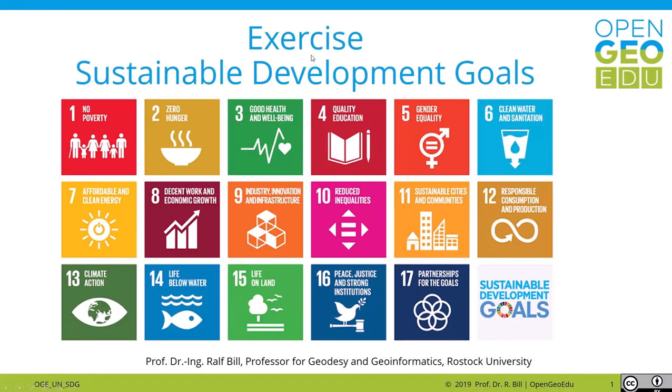The Agenda 2030 for Sustainable Development is a global United Nations Action Plan for People, the Planet and Prosperity, adopted by the UN General Assembly in September 2015. The 17 Sustainable Development Goals, so-called SDGs, are political objectives of the United Nations intended to secure sustainable development at the economic, social and ecological level. The goals entered into force on 1st January 2016 with a term of 15 years until 2030.